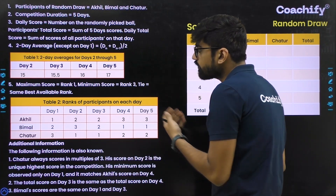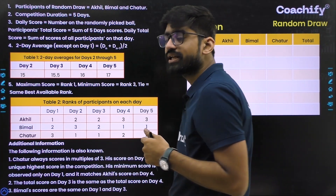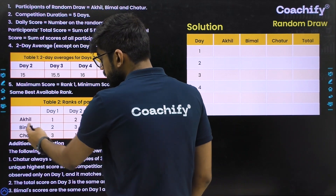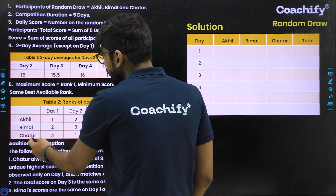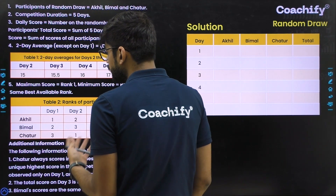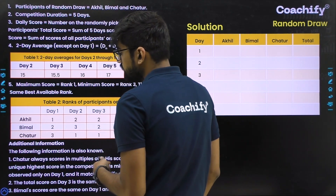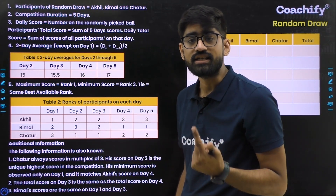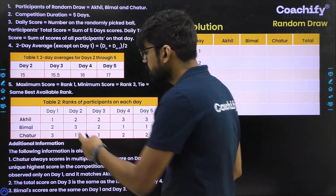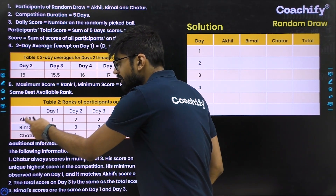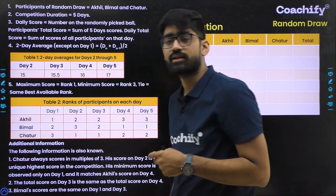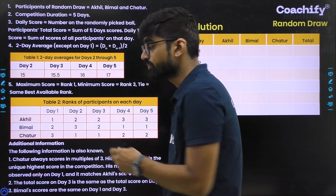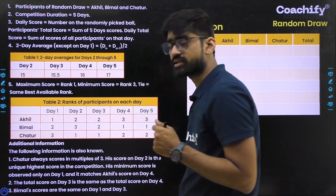The other table gives the rank of participants on each day. For day 1, Akhil has rank 1, Bimal has rank 2, and Chatur has rank 3. The one scoring the maximum gets rank 1, which is the best rank. So on day 1, Akhil is scoring the maximum and Chatur is scoring the least.